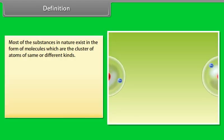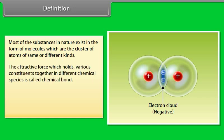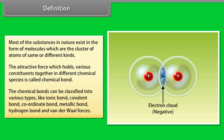Most of the substances in nature exist in the form of molecules, which are clusters of atoms of same or different kinds. The attractive force which holds various constituents together in different chemical species is called a chemical bond. Chemical bonds can be classified into various types: ionic bond, covalent bond, coordinate bond, metallic bond, hydrogen bond, and Van der Waal forces.